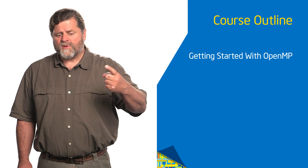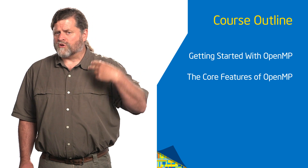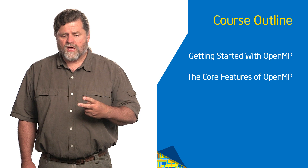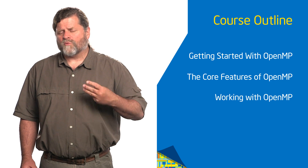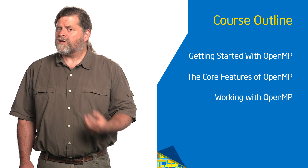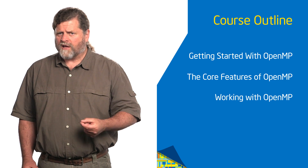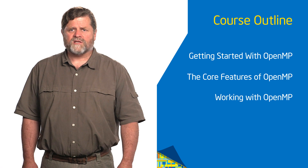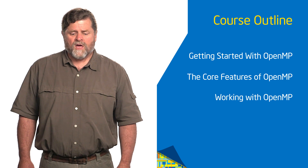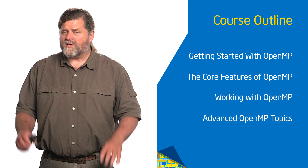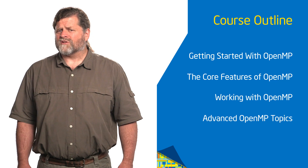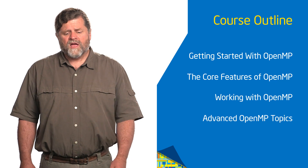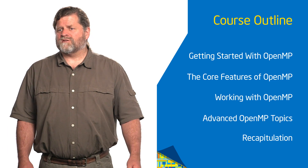There are five units. The first unit is getting started with OpenMP. The second unit covers the core features of OpenMP. The third unit is about doing real work with OpenMP — it's my goal that by the time you're done, you'll be able to go off and do real hardcore application programming. Then we'll cover more advanced features of OpenMP, and finally I'll have a brief recapitulation to wrap it all up. Now we're ready to start into the course itself.